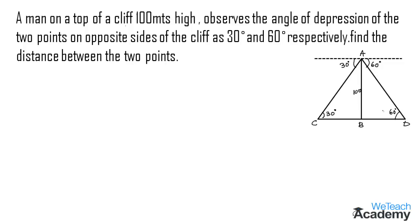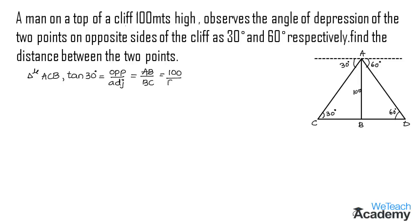To find the distance CD, let us consider triangle ABC. In triangle ABC, the angle is 30 degrees, so tan 30 degrees equals opposite by adjacent. The opposite side is AB, so we get AB by BC. Substituting AB equal to 100, we get 100 by BC equal to tan 30, which is 1 by √3. Simplifying, BC equals 100√3. Let us name this equation 1.